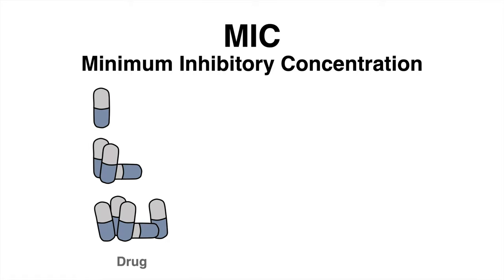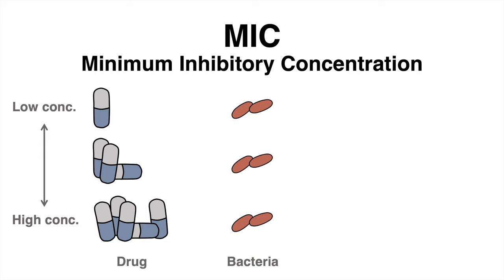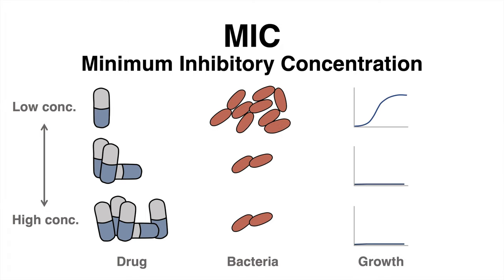Different concentrations of the compound are tested on the exact same number of bacteria, and the growth is monitored over time. In this example, low concentrations of the antibiotic did not show any effect since the bacteria displayed growth, while high and medium concentrations were able to inhibit growth. In this case, the minimum concentration that can inhibit bacterial growth — the MIC — equals the medium concentration.